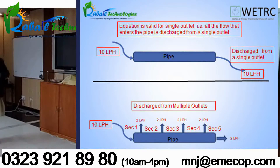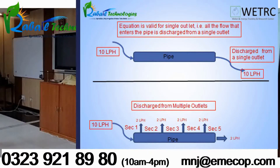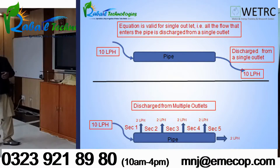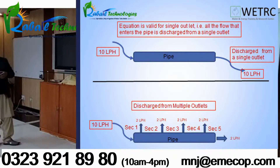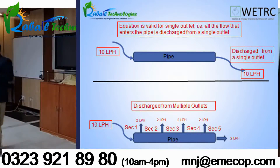But what if 10 liters per hour enters the pipe, yet at the final point only 2 liters per hour remains? Now you have varying flow along the pipe. For example, in section 1 we have 10 liters; in section 2, 2 liters have already been drained, leaving 8 liters; then 6, 4, and finally 2 liters.